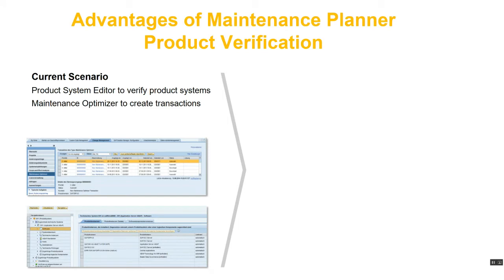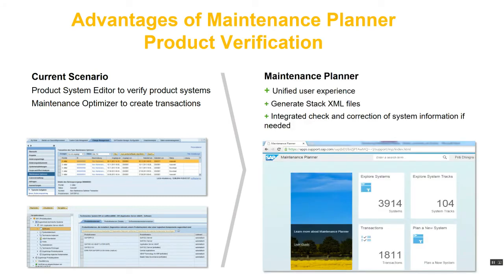Product verification is another advantage. In the current scenario, just like creating dependencies, you use the product system editor in the LMDB to verify product systems in your landscape in order to generate a stack XML file using Maintenance Optimizer. Without verifying a product system you cannot generate the XML file, and Maintenance Optimizer doesn't have the capability to verify product systems itself. Maintenance Planner has this feature built in, so you don't need to use multiple tools — you just use Maintenance Planner going forward.